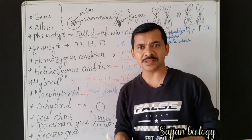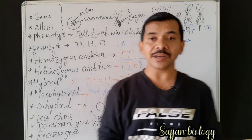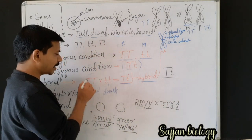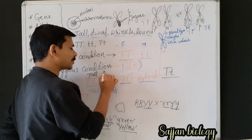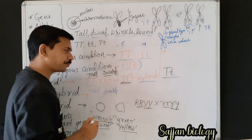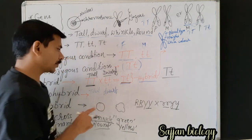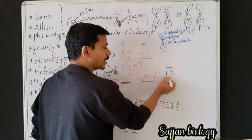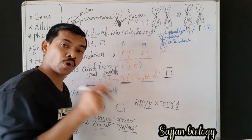Now, dominant gene: a dominant gene is a gene which expresses itself even in the presence of a recessive gene. For example, capital T capital T expresses tallness, and small t small t expresses dwarfness. When we cross these and get capital T small t (Tt), the tallness is expressed. So capital T is the dominant gene — it expresses tallness even in the presence of small t.